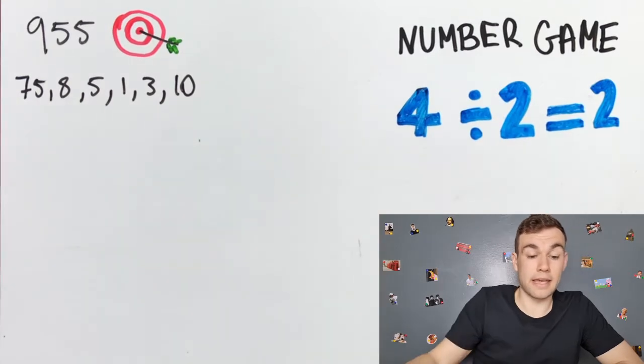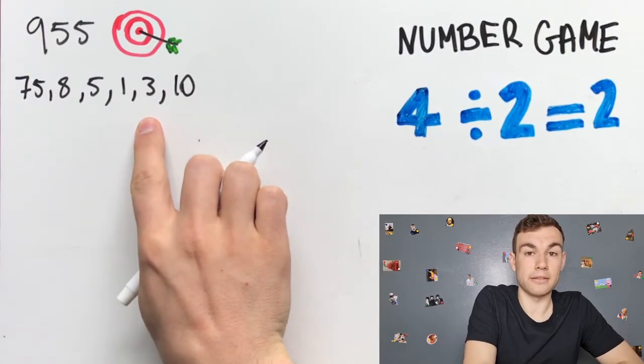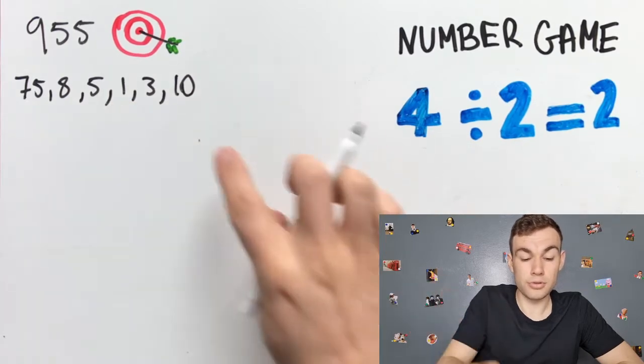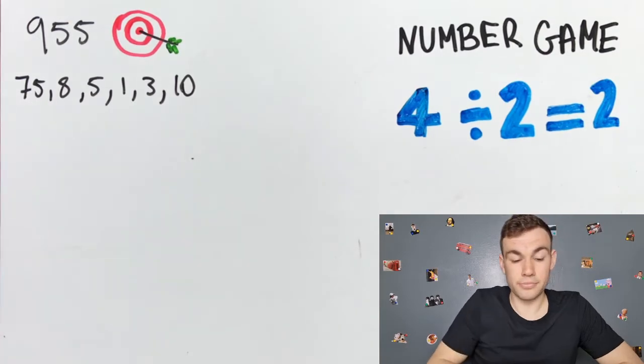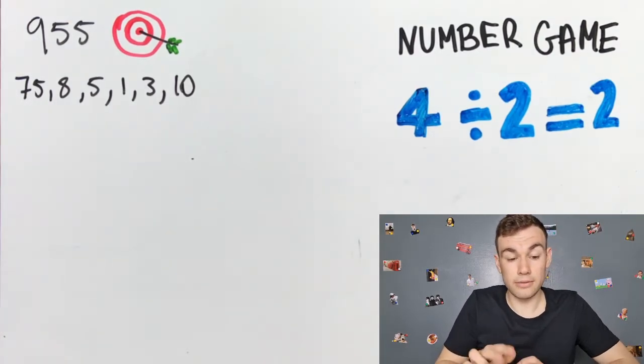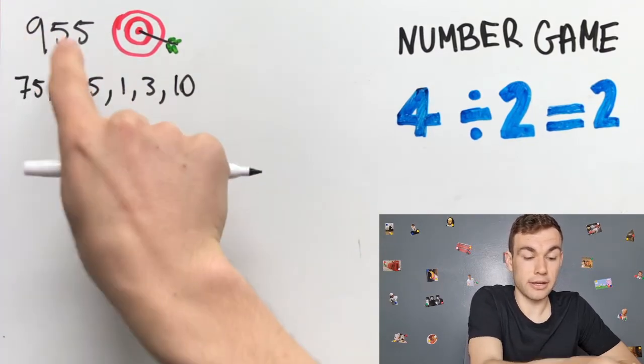If we add, for example, 10 and 3 to get 13, we lose 10 and 3 and get back 13. We are aiming at this number. This is our target.